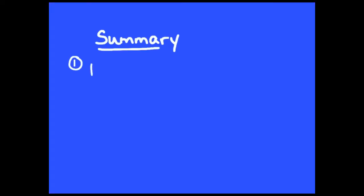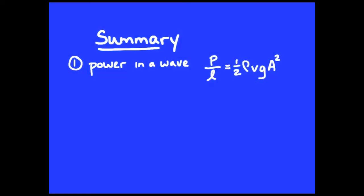Let's summarize this video lesson. Number one, the power stored in a wave. We talk about the power per meter of wave front, and that is one-half rho v g a squared.